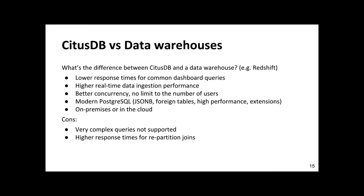The cons: CitusDB is not a data warehouse and not suitable for very complex queries. It doesn't support sub-queries in the WHERE clause, which is something people writing ad hoc business intelligence queries often use. If you can't control your queries, CitusDB may not be the best choice. For repartition joins, data warehouses are more optimized for those types of queries that can take seconds or minutes. CitusDB is more optimized for simple, low-response-time queries. With that, I'll pass it over to AJ to show how to combine CitusDB with Chartio.